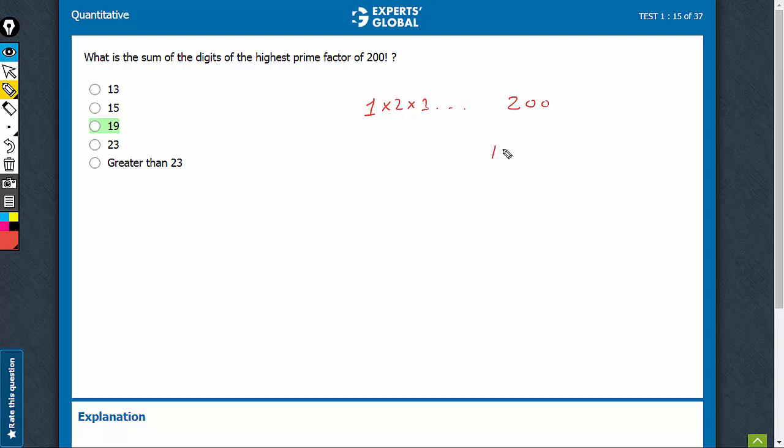So, 199. We start with 200. 200 is, of course, not prime. 199. 199 itself is a prime number.